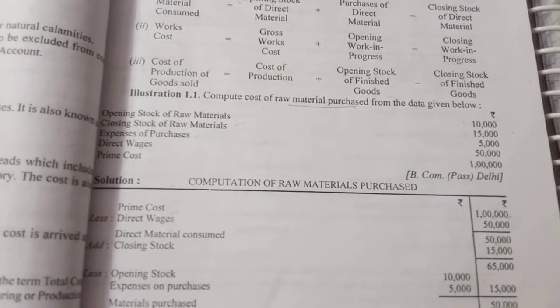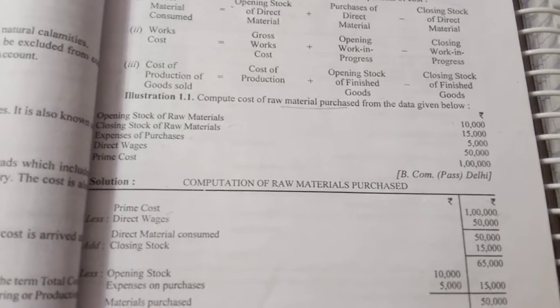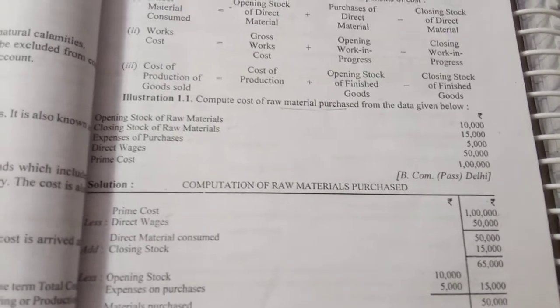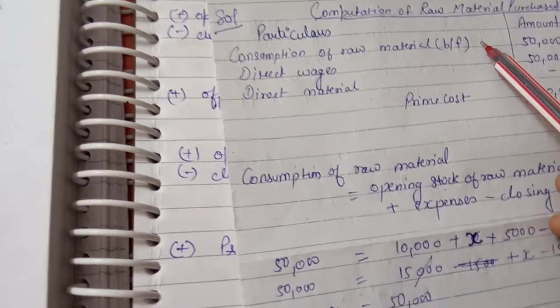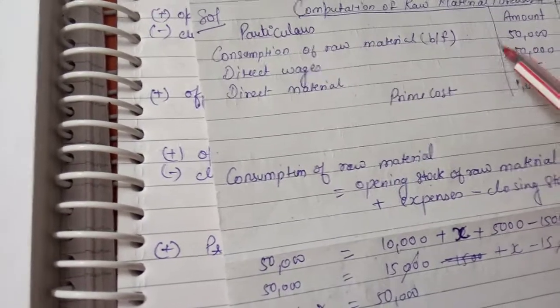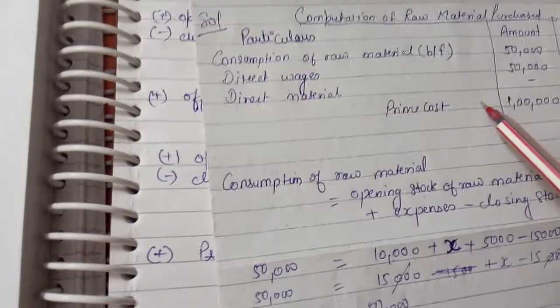Direct wages 50,000, prime cost 1 lakh. So see here how to solve it according to format. As you know, first consumption of raw material, then direct wages, direct material, then prime cost.